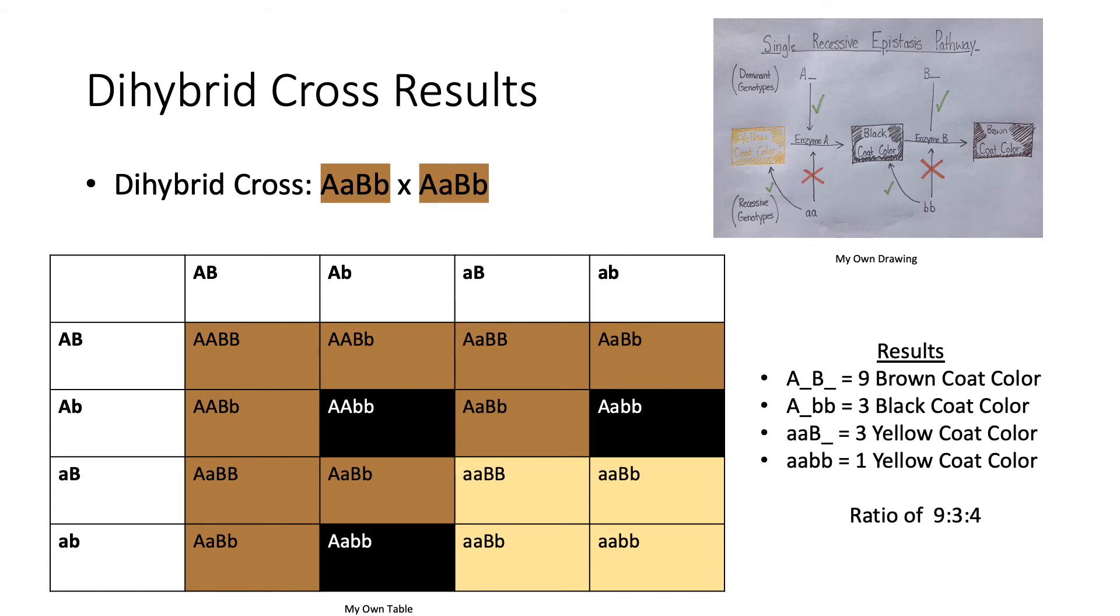Three offspring display a dominant genotype at the first gene, but are homozygous recessive at the second gene, resulting in a black coat color phenotype due to the lack of production of enzyme B.